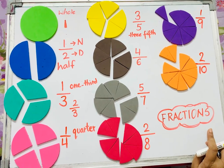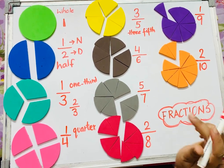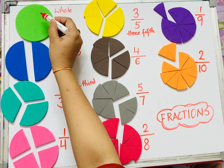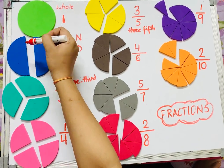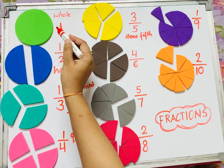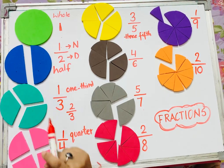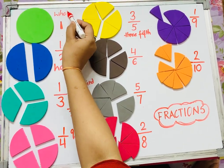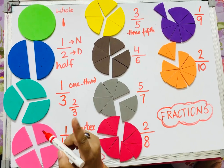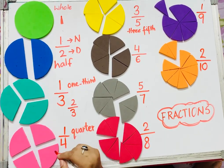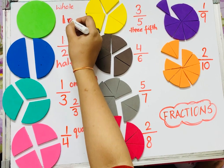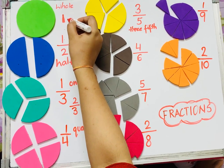Let's make it easy by taking an example. Let's take this circle and imagine it's a pizza. It is not divided or cut into any parts, so it is a whole — one whole pizza. How many pieces can you see? Only one, so it's whole, or one pizza.